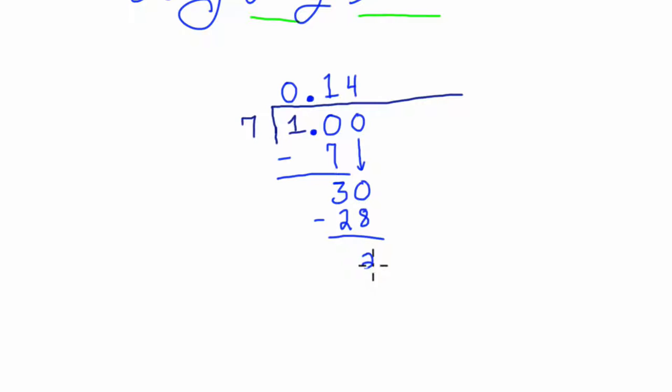I subtract. 30 minus 28 is 2. Does 7 go into 2? Well, let's carry down a 0 here, right? And we can think, how many times does 7 go into 20? Now that's twice. 7 times 2 is 14. And 20 minus 14 is 6.